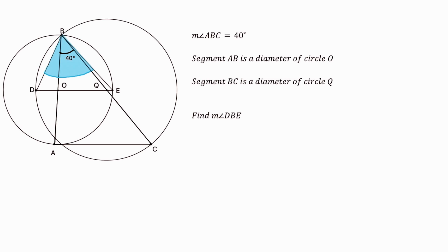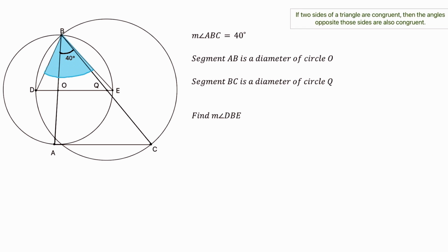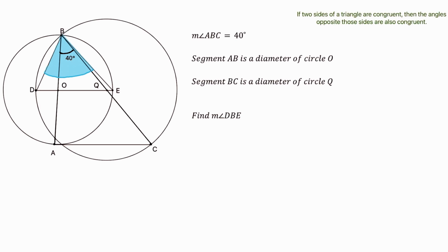Alright, now to solve this problem we'll need to make use of a helpful little theorem: if two sides of a triangle are congruent, then the angles opposite those sides are also congruent. You'll see why we'll need this theorem in a bit, but for now let's try to establish some mathematical relations in this diagram.